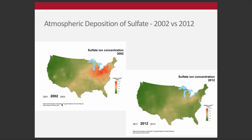This data has been collected since the early seventies. Looking at the sulfate ion concentration in 2002, we can see a high concentration in the Eastern Midwest. The reason is there's a lot of industry — coal-fired power plants that provide electricity along the Ohio River. Ohio is also a very populated state, so there's a lot of fossil fuel combustion, and then deposition that occurs from that. It essentially follows the jet stream and travels up into the Northeast.